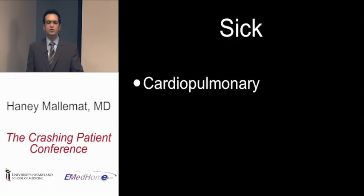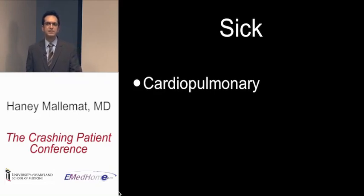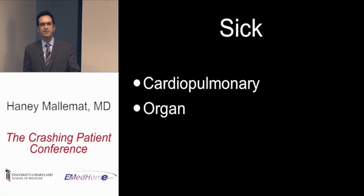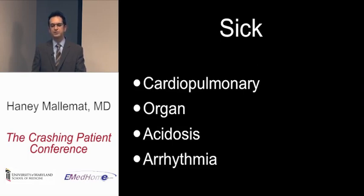Patients who are ill also have reduced cardiopulmonary reserve. They may have cardiac dysfunction from the disease itself, or the illness — such as pneumonia — might affect the patient's respiratory reserve. The illness may directly affect end organs, such as causing renal insufficiency. The patient might also be acidotic, whether from metabolic acidosis from the illness or respiratory acidosis from pulmonary dysfunction. Acidosis increases the risk of arrhythmias, further complicating management.